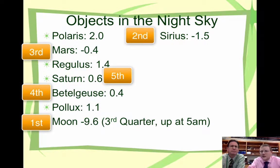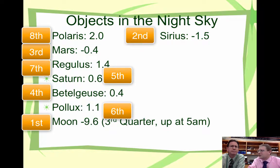Then Pollux at 1.1. Regulus, 1.4. And Polaris is the dimmest object on this list. And people always say, Polaris is so special because it's the brightest. Not so much. It's the northest. That's the best Polaris has to offer.